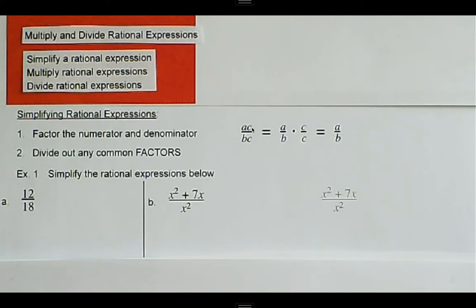So there are some steps in order to simplify rational expressions. First thing is, factor the numerator and the denominator, and then divide out any common factors.